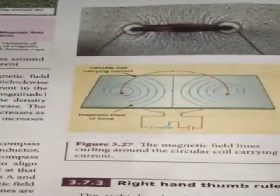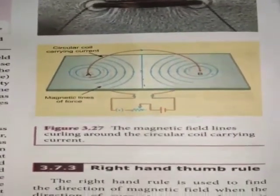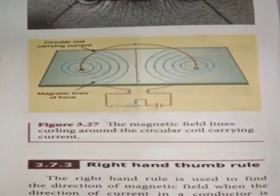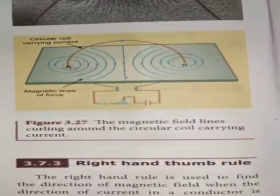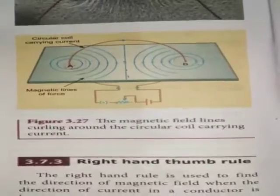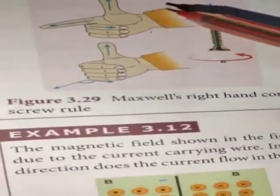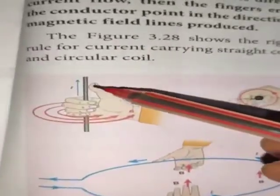We hold the current carrying conductor in our right hand such that the thumb points in the direction of the current. Then the fingers encircling the conductor point in the direction of the magnetic field lines.